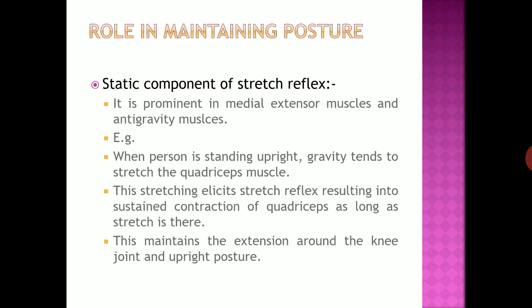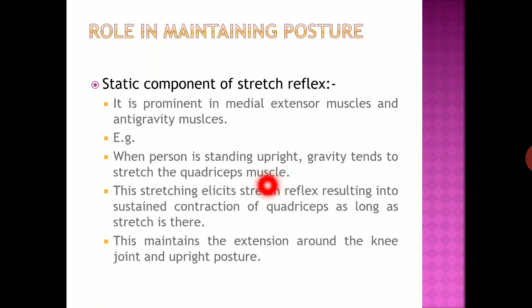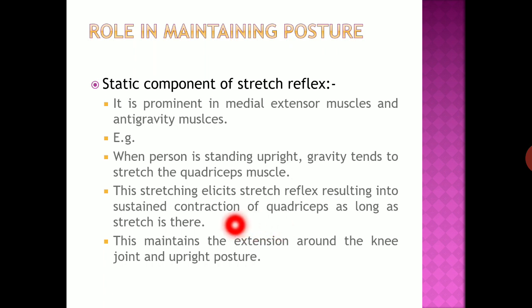The role of stretch reflex in posture is prominent in medial extensor muscles and anti-gravity muscles, with a static component of the stretch reflex. For example, when a person is standing upright, gravity tends to stretch the quadriceps muscle. This causes stimulation of the muscle spindle in the quadriceps, which sends signals to the spinal cord, stimulating alpha motor neurons to produce contraction of the quadriceps muscle. Posture is thus maintained — the stretch reflex resulting in contraction of quadriceps maintains extension around the knee joint and upright posture.